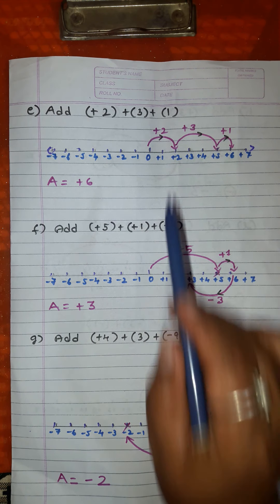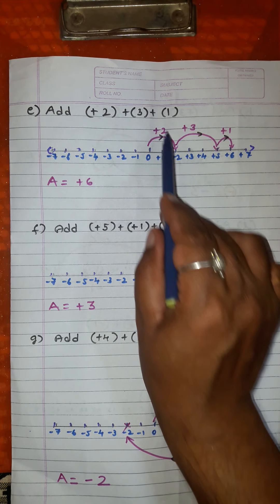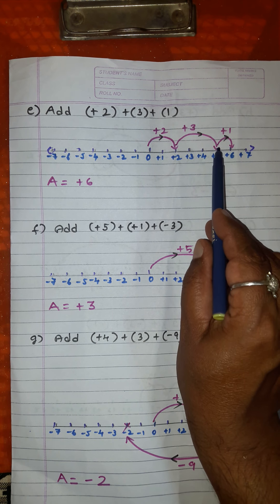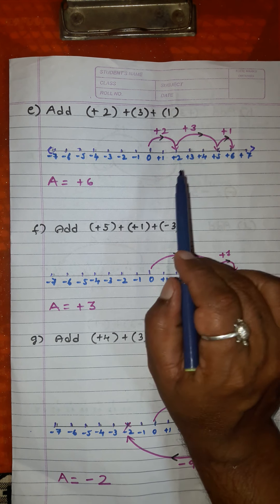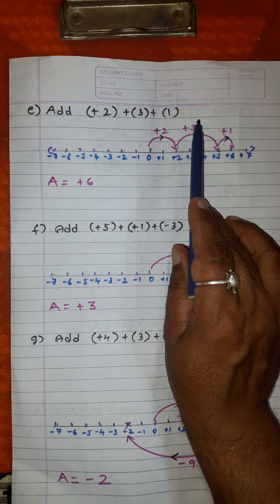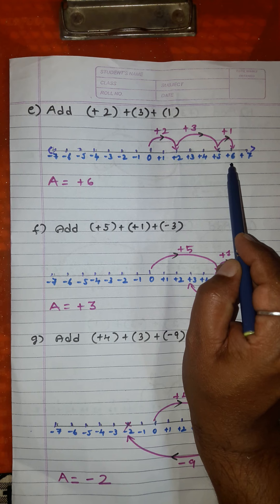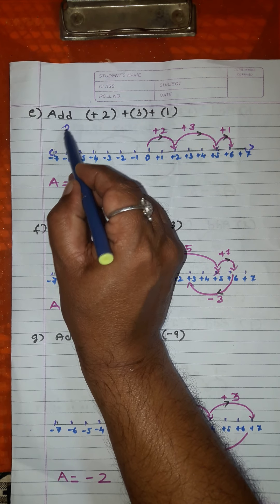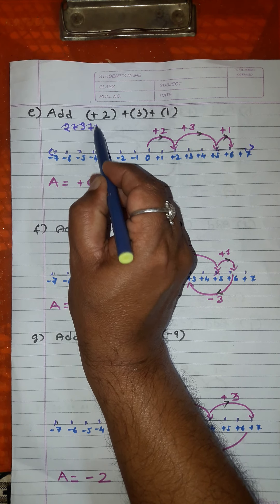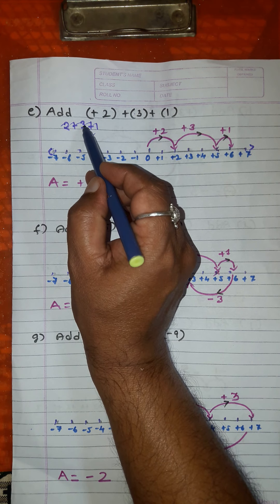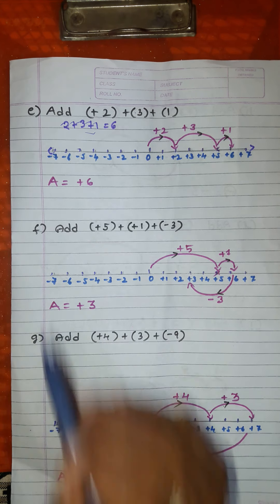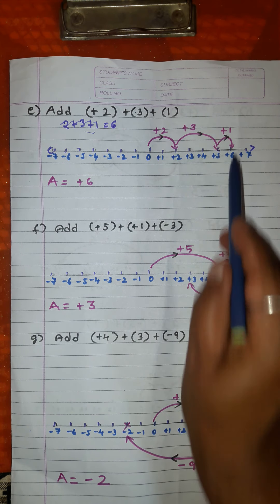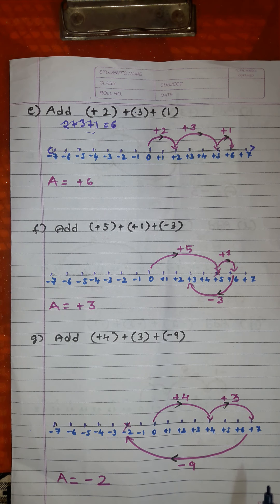Seventh problem: add plus 2, plus 3, and plus 1. Move plus 2 to the right — we reach plus 2. Again plus 3: 1, 2, 3 — we reach plus 5. Again move plus 1 to the right — ultimately we reach the point with value plus 6. What is the answer? Plus 6. Mentally: plus into plus is plus, 2 plus 3 is 5, 5 plus 1 is 6. Never forget to draw the number line and show curved arrows to arrive at the answer.